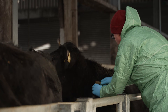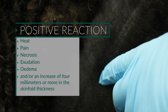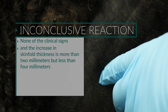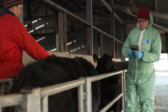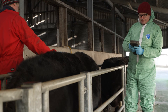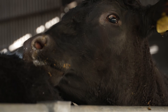The reactions at the injection site must be interpreted as follows. A positive reaction is a reaction with clinical signs of heat, pain, necrosis, exudation, or edema, and/or an increase of four millimeters or more in skin fold thickness. An inconclusive reaction is a reaction with none of the clinical signs and an increase in skin fold thickness of more than two millimeters but less than four millimeters. A negative reaction is a reaction with none of the clinical signs and no increase in skin fold thickness, or an increase of less than or equal to two millimeters. The testing veterinary practitioner, having examined, palpated, and measured the reactions, must then interpret the test and make a decision in accordance with the test interpretation chart.